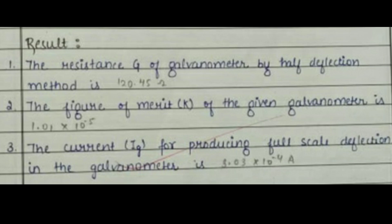This image shows the result that has been obtained. The resistance of galvanometer by half deflection method is 120.45 ohms, the figure of merit is 1.01 into 10 to the power minus 5, and the full scale deflection of the galvanometer is 3.03 into 10 to the power minus 4 amperes.